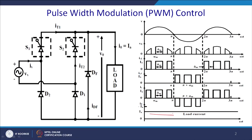We were discussing extinction angle control. To achieve extinction angle control, we assume the load current to be constant. You trigger on at firing angle alpha, then force-commutate using negative gate current for thyristors or GTO, so the current is chopped at the input. Due to that, the freewheel diode comes into the picture and makes the load current continuous.